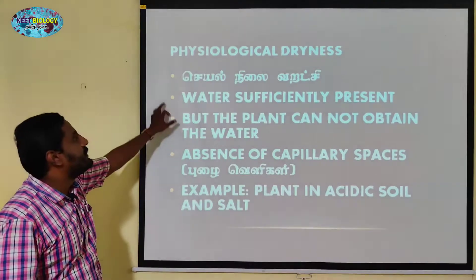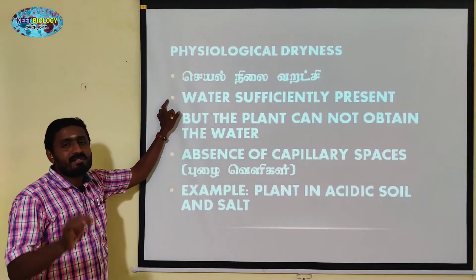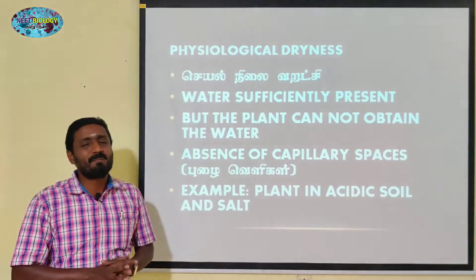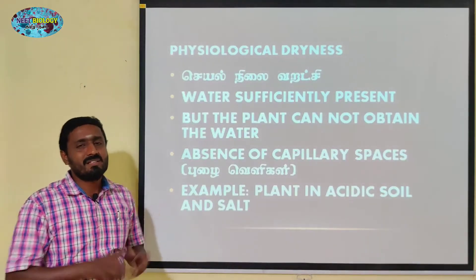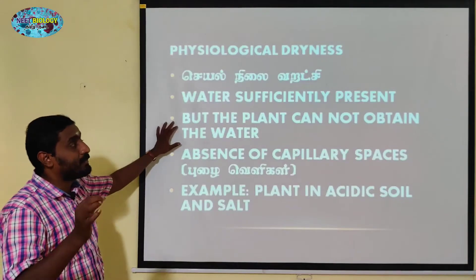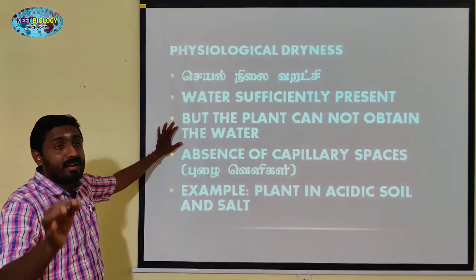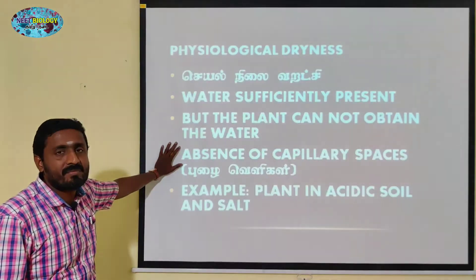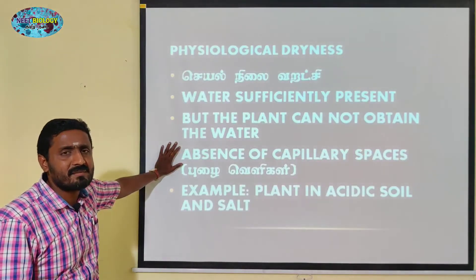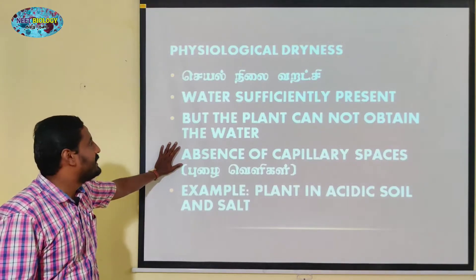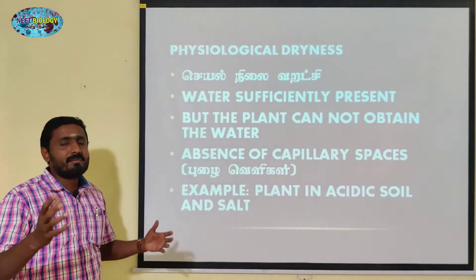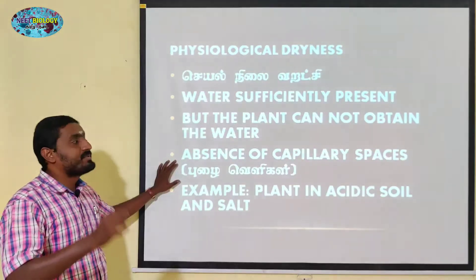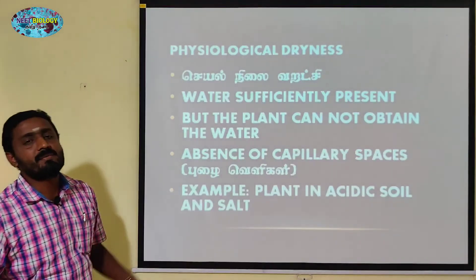Water is sufficiently present, but the plant cannot obtain the water. That is the key issue with physiological dryness. There are specific reasons why the plant is unable to absorb water in these conditions.